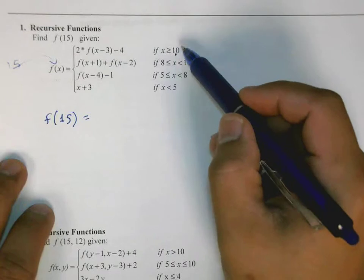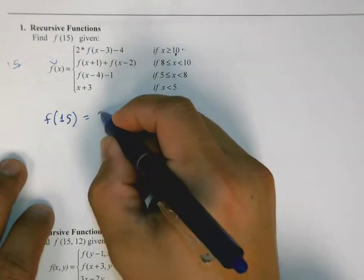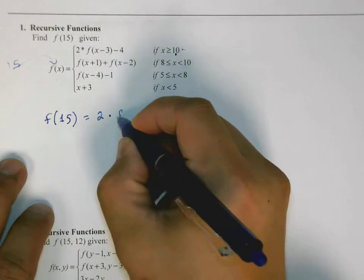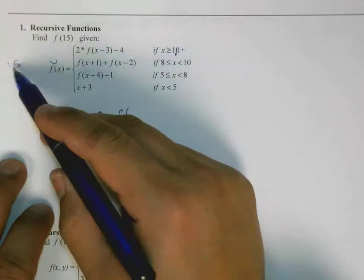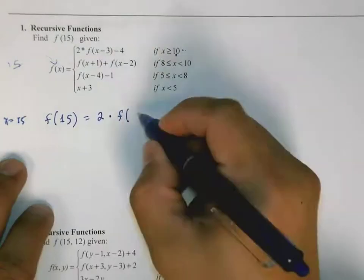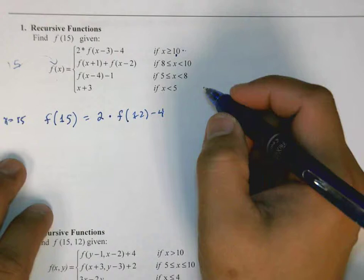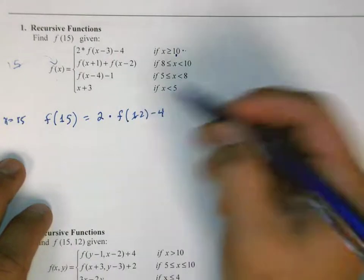x is greater than or equal 10, so return 2 times f of x minus 3. So 2 times f of, x here is 15, so right now x is equal to 15, so we're going to try to find f of 12 minus 4. And we don't know what f of 12 is, so we compute that.